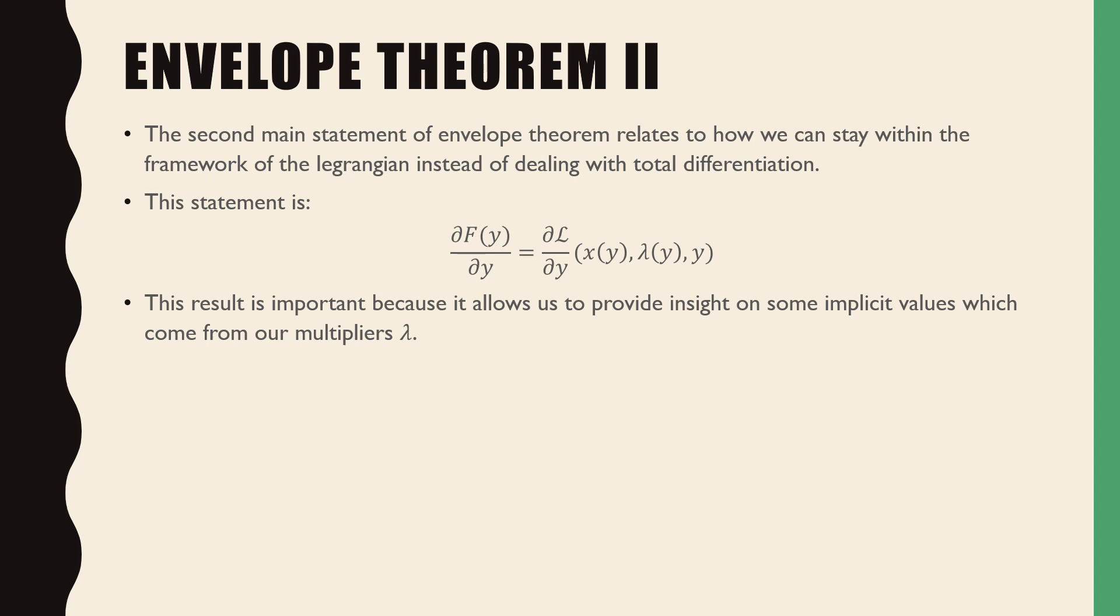This result is important because it allows us to provide insight on some of the implicit values which come from our multiplier lambda.